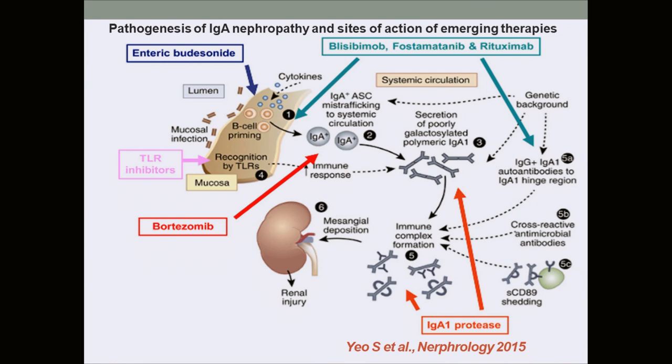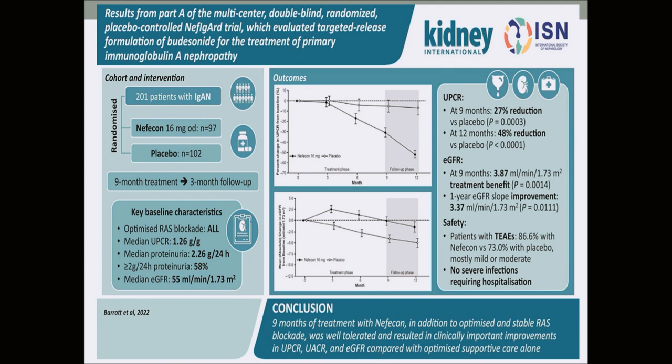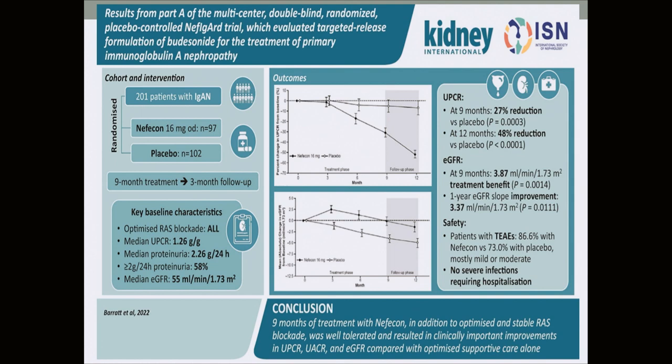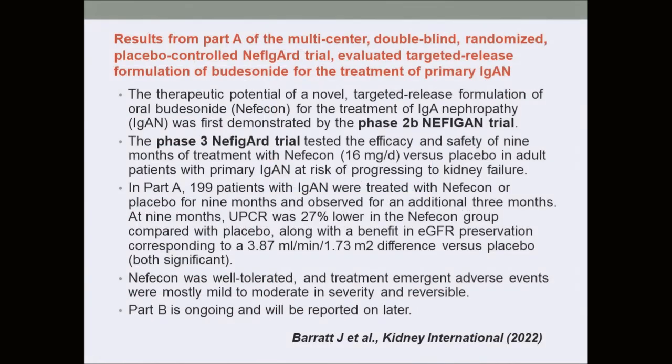Some emerging treatments are currently under trial and results expected within the next two years. Starting from the pathogenesis at the gut level, the most promising is enteric-coated budesonide — Nefecon — which was tried in phase 2 trial (the NEFIGAN trial) showing significant effects, and is now conditionally approved by the FDA for IgA nephropathy. The phase 3 NEFIGARD trial is currently ongoing.